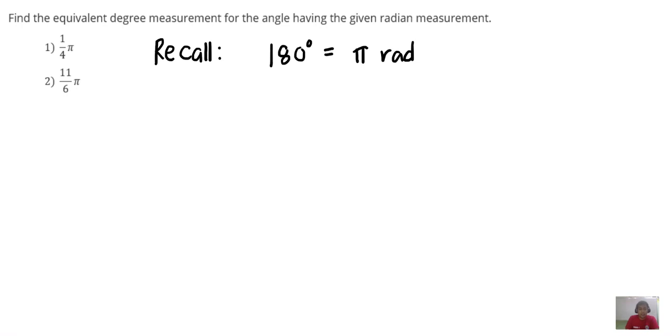So how do we do this? For number one, we are given 1 over 4 pi radian, and then we need to multiply this one by our conversion factor 180 degrees to pi radian.